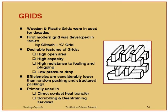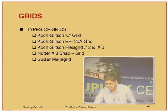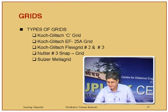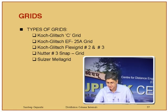Grids are used for very high vapor-liquid services where efficiency is not the primary concern but rather heat transfer, direct contact cooling, or handling very large amounts of solids, with very few theoretical stages required. Types include C-grid, EF-25, Flexi-grid, Snap-grid, and Mela-grid from various vendors.